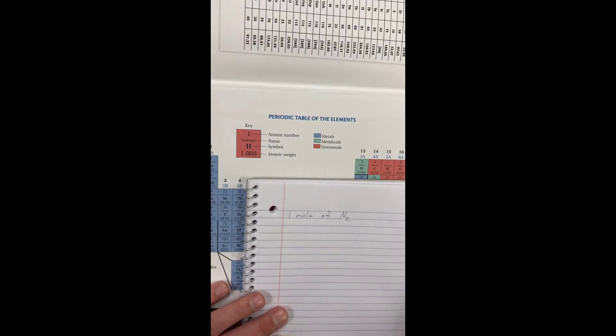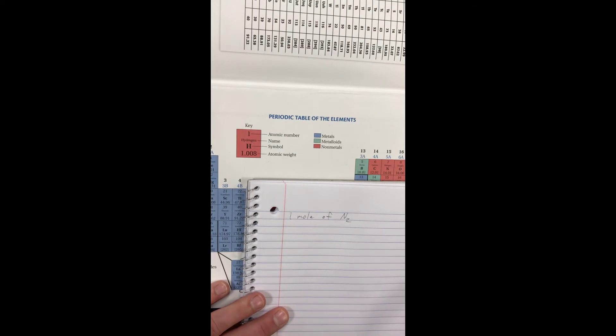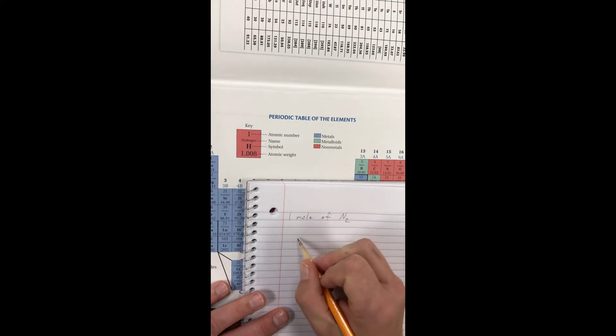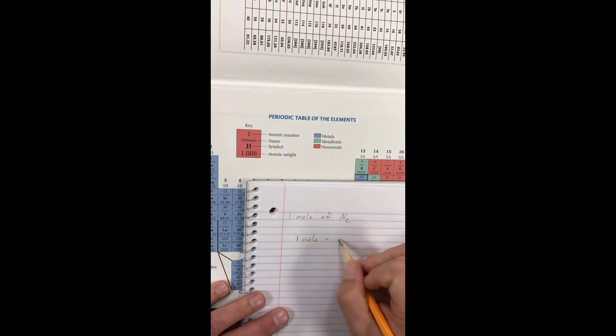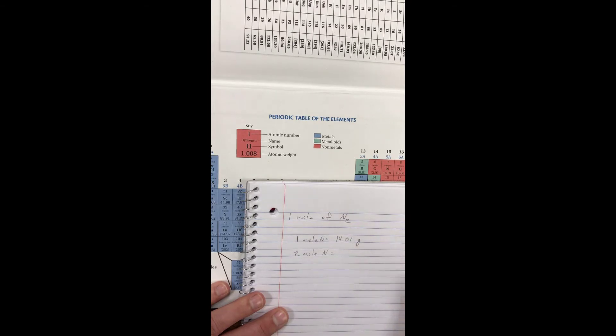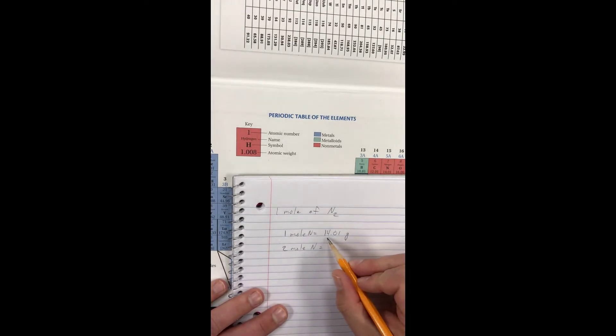But in my example, how many nitrogens do I have? I have two nitrogen atoms in nitrogen gas. So I'm going to need two of those. So if one mole equals 14.01 grams, one mole of nitrogen, then two moles of nitrogen is going to be double that. So what would that be?